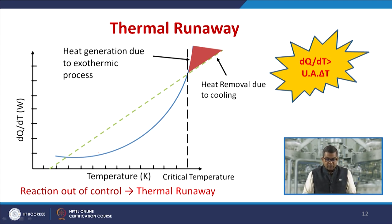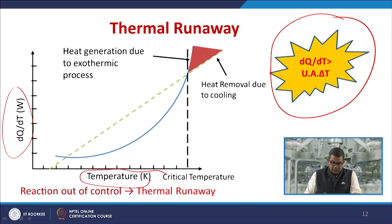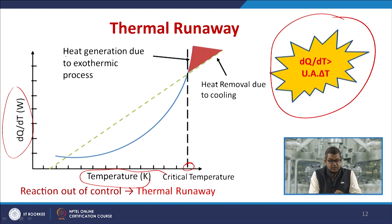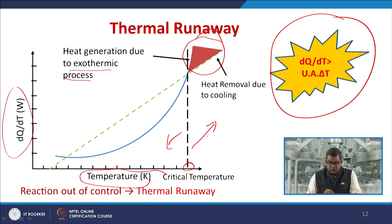Thermal runaway problems are governed by this equation. With dQ/dt on the y-axis and temperature on the x-axis, you need to find the critical temperature beyond which thermal runaway may occur. If by any means an exothermic process liberates excess heat, you need to determine how much heat removal is required for cooling to stay below this critical temperature. If it goes beyond this critical temperature, appropriate safety measures must be taken.